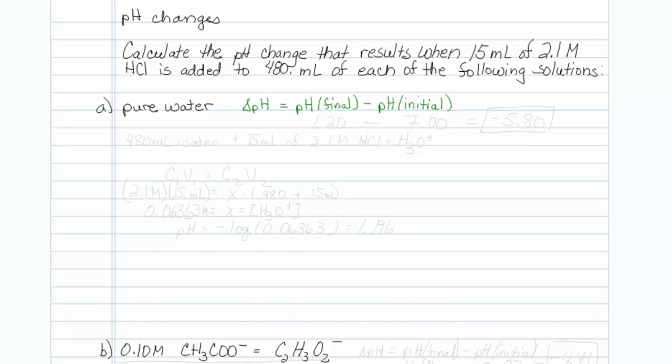So I am trusting that you realize that initially the pH before anything is added of pure water is 7. We need to find out what is the pH of 480 mL of water when we add 15 mL of 2.1 molar HCl to it.